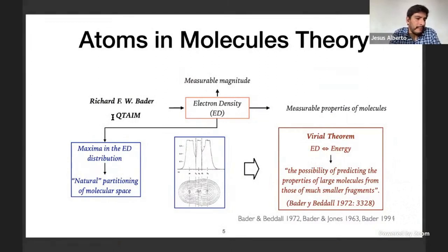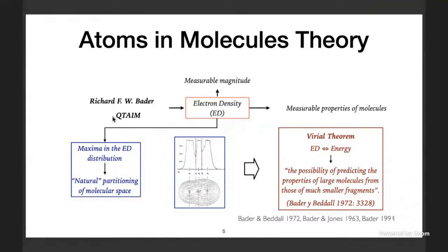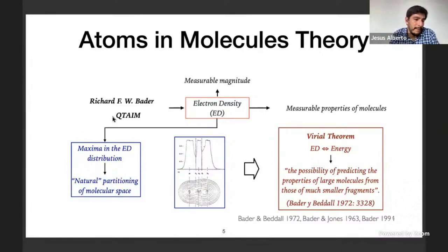QTAIM was developed by Richard Bader and is based on the measurable magnitude of electron density, which determines certain measurable properties of molecules. Bader, analyzing the charge distributions of different molecules, notes that the morphology is dominated by maxima in the distribution, which leads to the natural partitioning of molecular space into mononuclear regions. By applying the Virial theorem it is possible to establish a connection between electron density and energy, and in addition it is possible to predict the properties of the whole molecule in terms of much smaller fragments which will be associated with the atoms in the molecule.